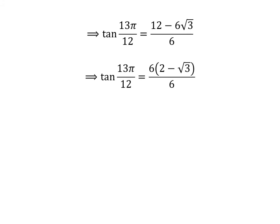Taking out the common factor 6 in the numerator and cancelling it with the denominator gives us tangent of 13 times pi upon 12 is equal to 2 minus square root of 3.